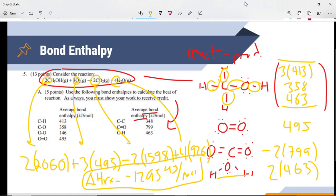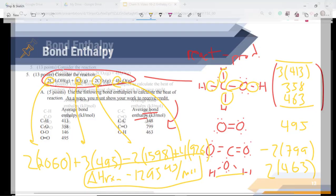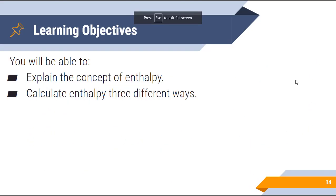So there are three ways we calculate enthalpy to determine if a reaction is endothermic or exothermic: Hess's law, enthalpy of formation, and bond enthalpy. That's all for our learning objectives today. I really appreciate your hard work. Thank you so much for all that you do, and we will see you guys next time. Have a great day!